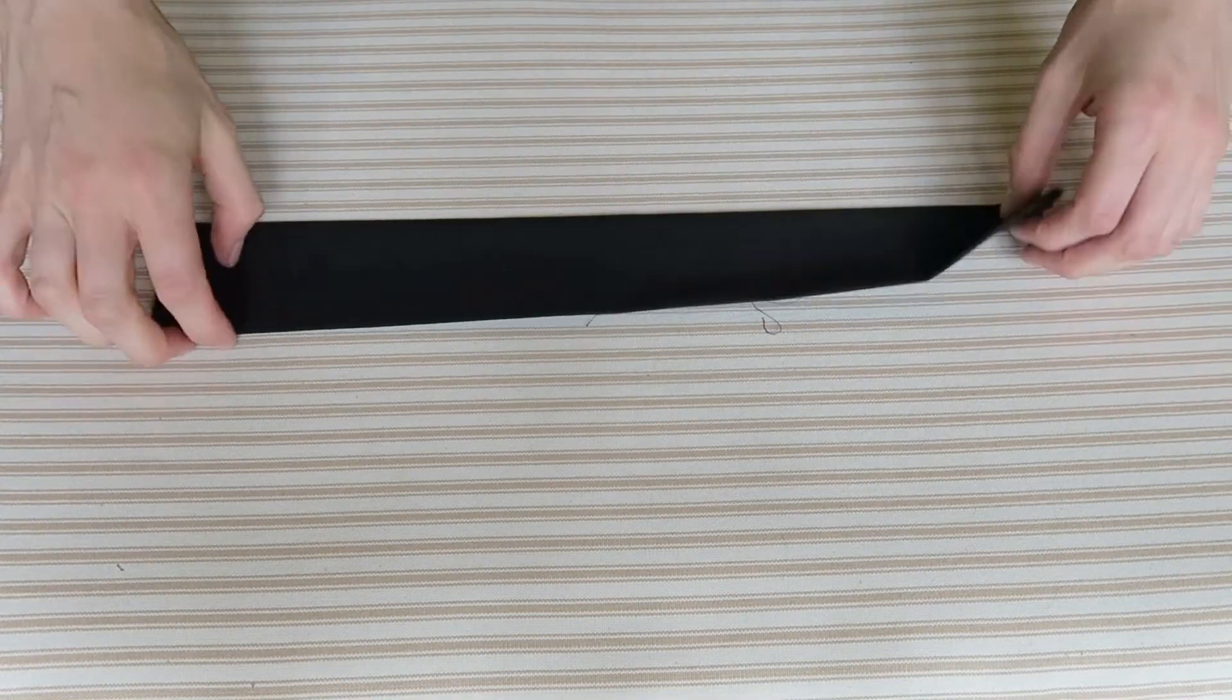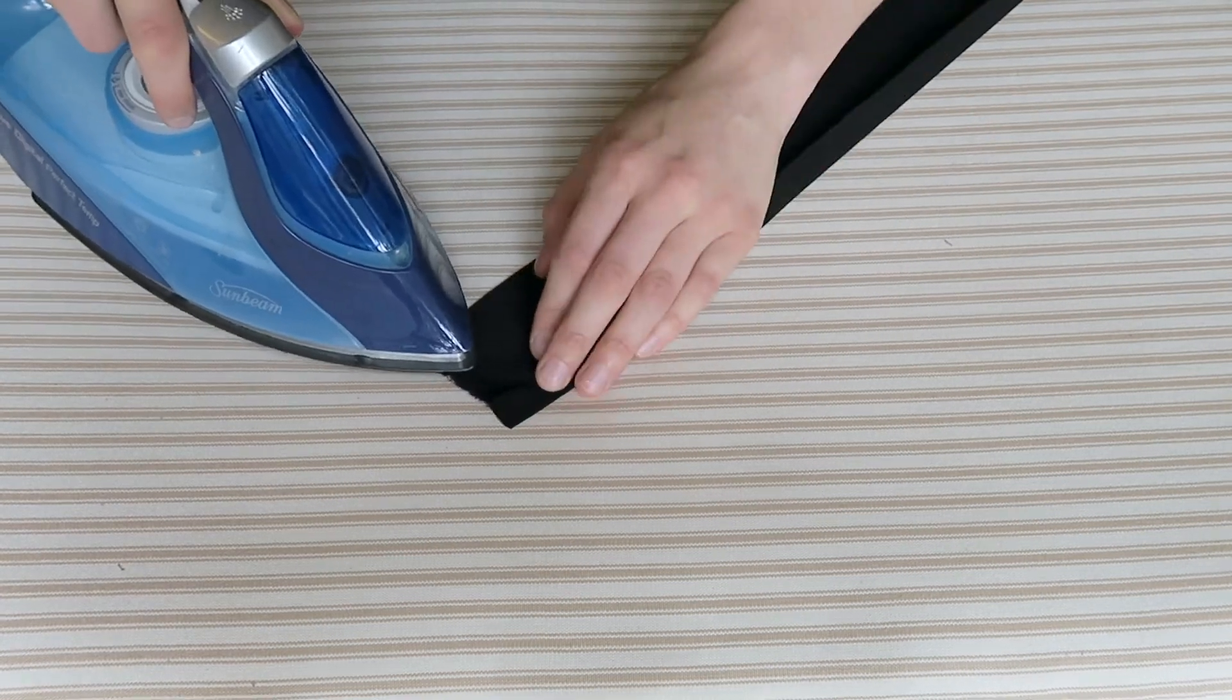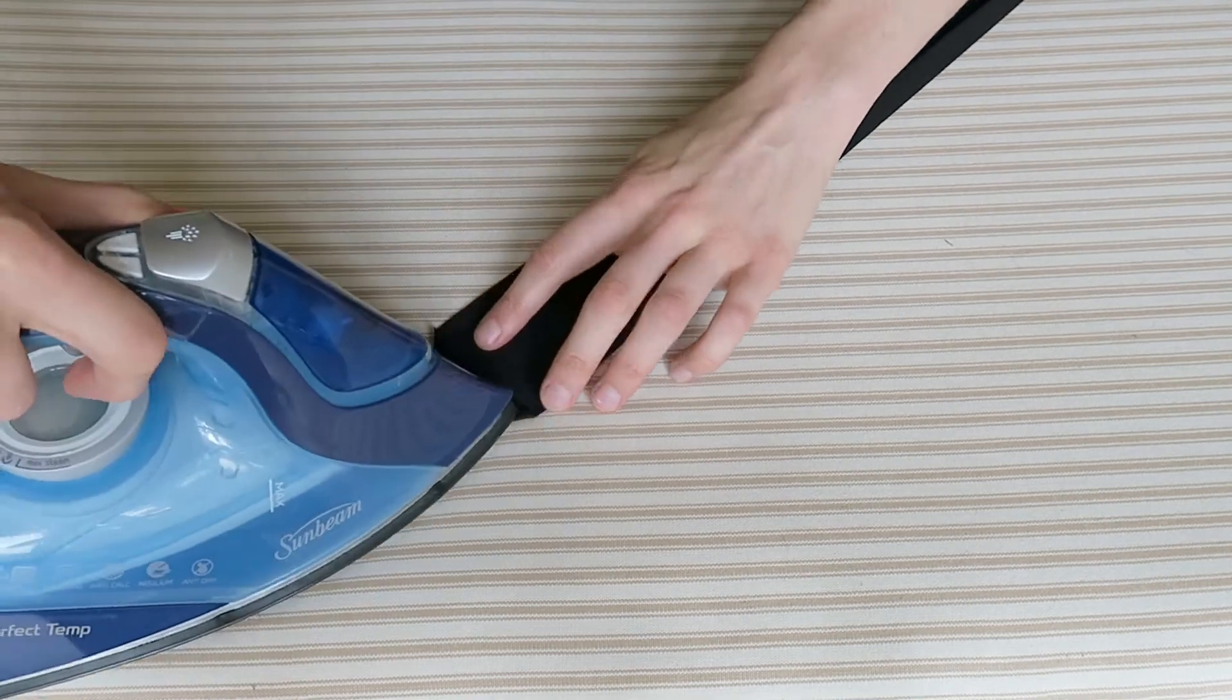For the lower edge, turn in each of the bottom corners and then fold that up to make a straight edge. Iron it in place.